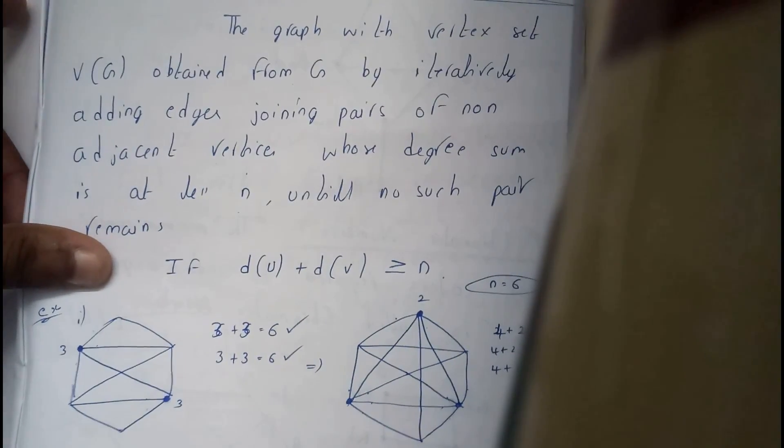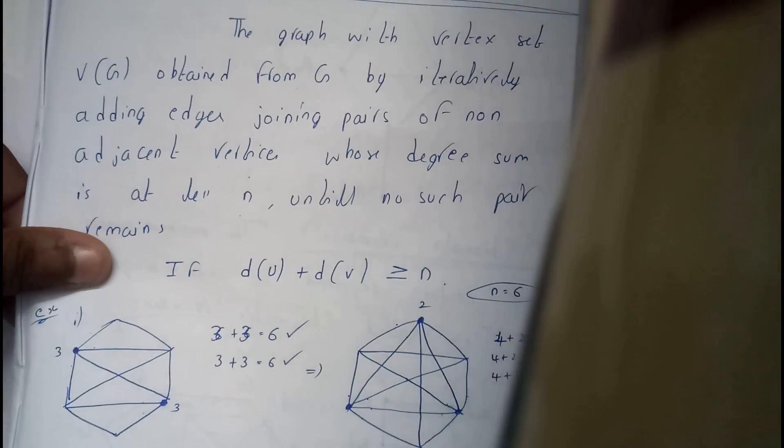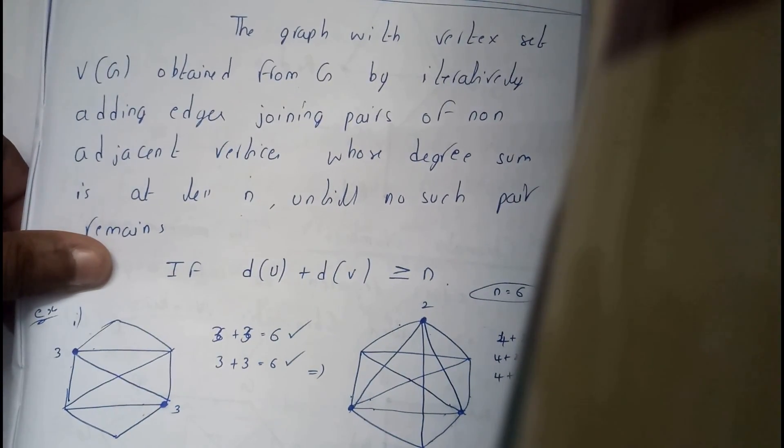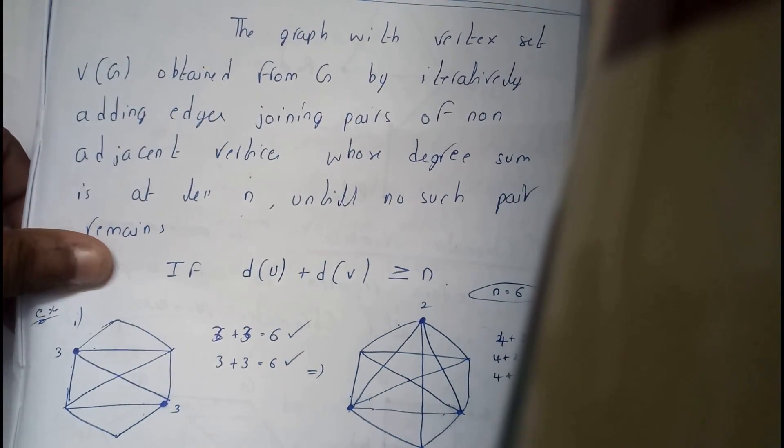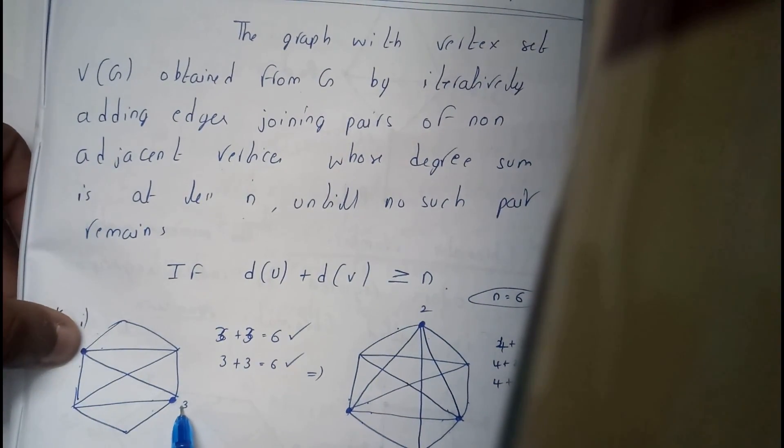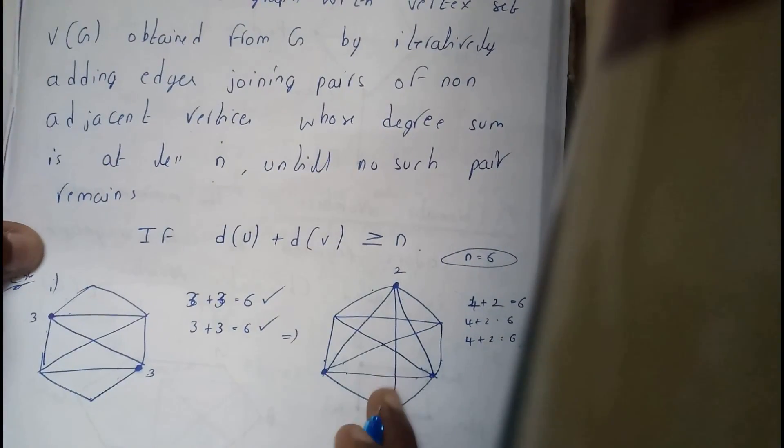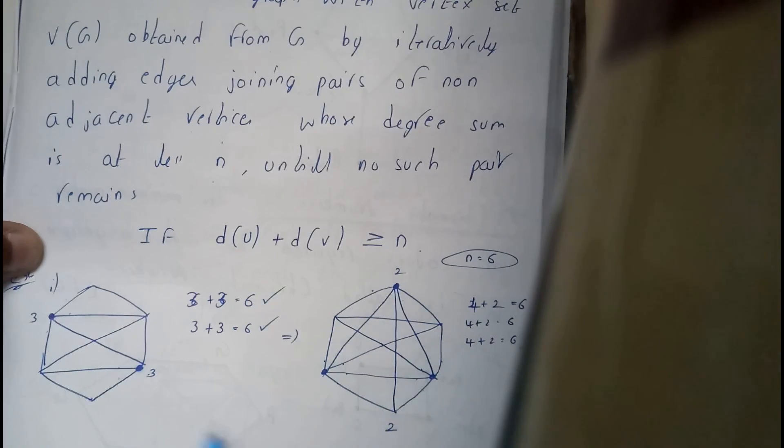So initially, as we have found the degree in few of the problems, similarly here also we will be finding the degree. So let us take these two points. Initially, this is the diagram. So after conversion of this, I got like this. So let us go through it.